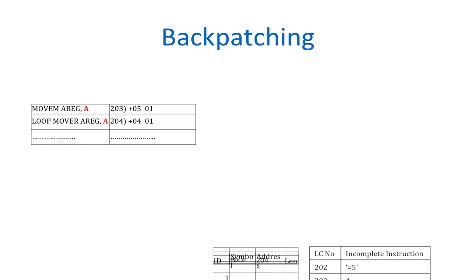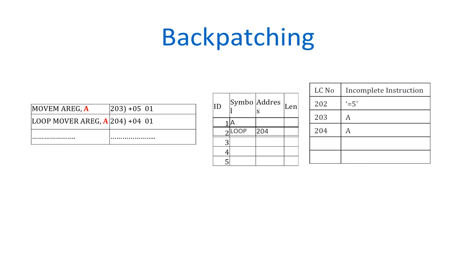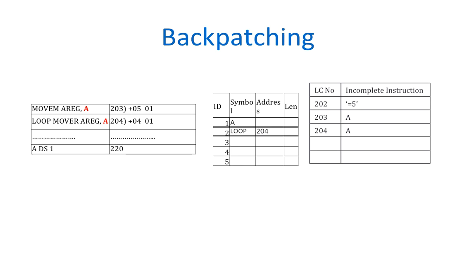As an example of backpatching: here A is a forward reference symbol, so its address is absent in the symbol table and also absent in the machine code generated, and the incomplete instructions are added into the table of incomplete instructions. When its definition is encountered, its address will be added into the symbol table, and when processing of assembly language statements ends, the incomplete instructions are processed sequentially and the addresses for the incomplete instructions are added into the machine code.